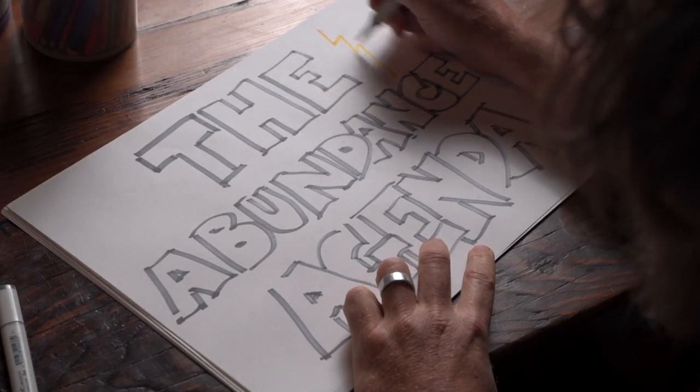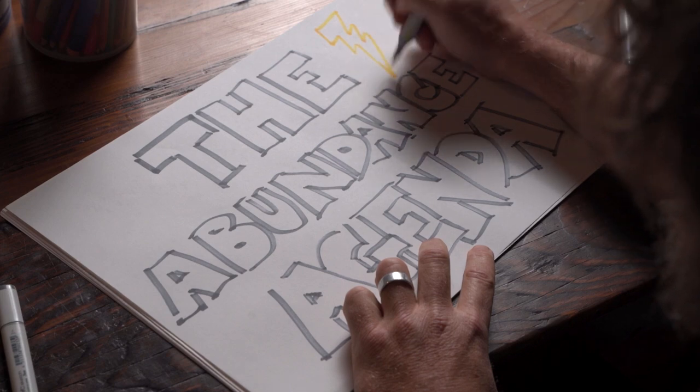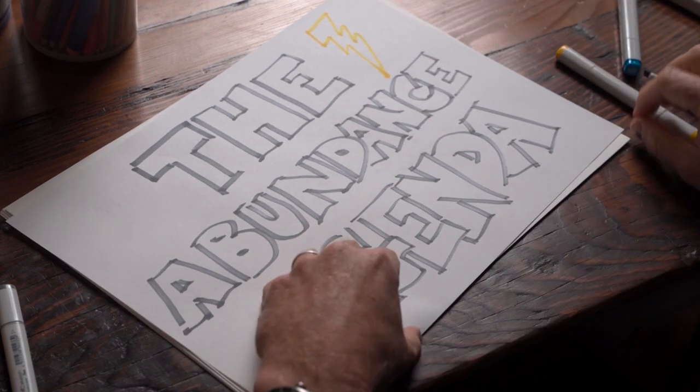This is the abundance agenda, electrification. Part of that abundance is we don't no longer have to think about just trying really hard to get 100% renewable. We have to think about true abundance, oversupply.